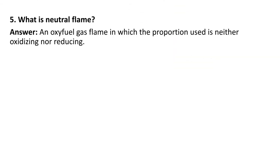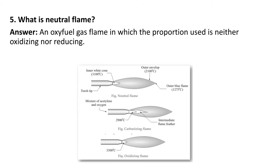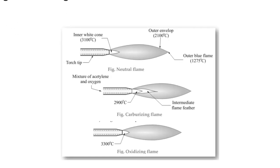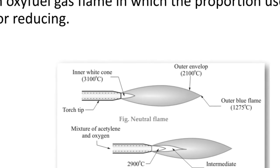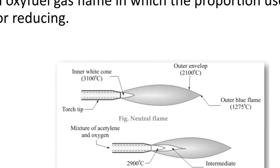Next question: what is a neutral flame? A neutral flame is an oxy-fuel gas flame in which the proportion used is neither oxidizing nor reducing. In gas welding, when fuel and oxygen are in equal proportions, you get a neutral flame.